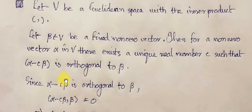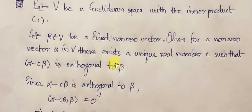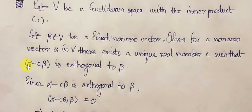This scalar C, for which alpha minus C*beta is orthogonal to beta, is called the scalar component of vector alpha in the direction of beta — or the component of alpha along beta.